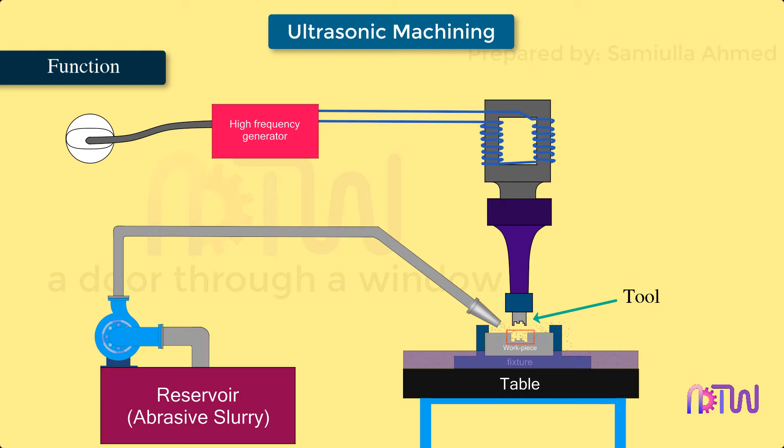Tools are manufactured in the same shape as the cavity needed to be created on the workpiece surface. Slurry: The slurry consisting of hard abrasive particles, generally silicon carbide, boron carbide, and alumina mixed with water or oil, is provided constantly at the machining area. Pump is used to supply abrasive slurry at the machining area.